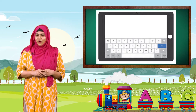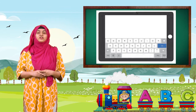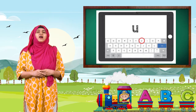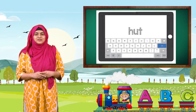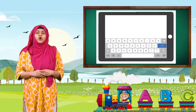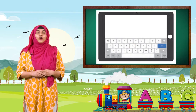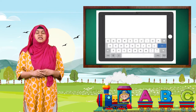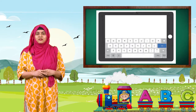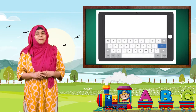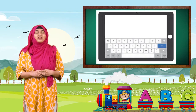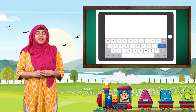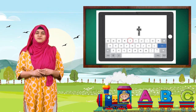Children, now let us revise the words on the tab. The words were: H-U-T — hut. D-O-G — dog. L-O-C-K — lock. P-E-N — pen. And B-A-T — bat.